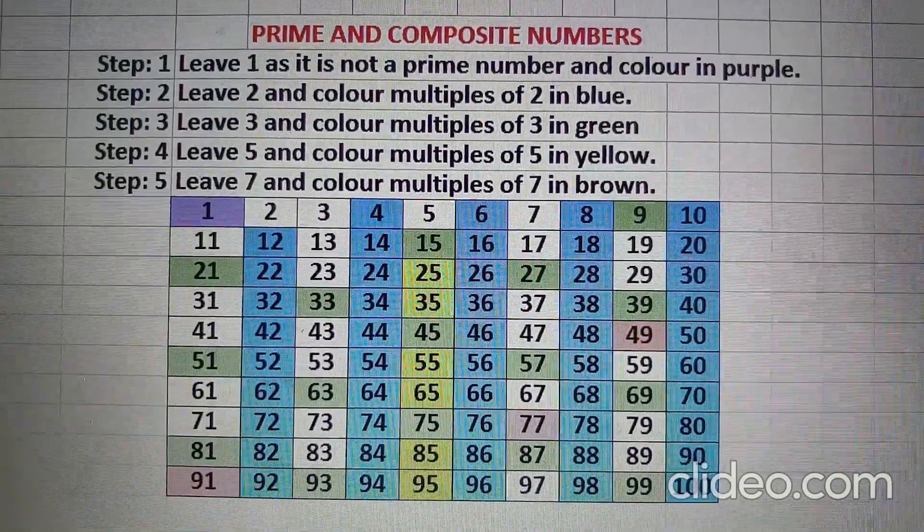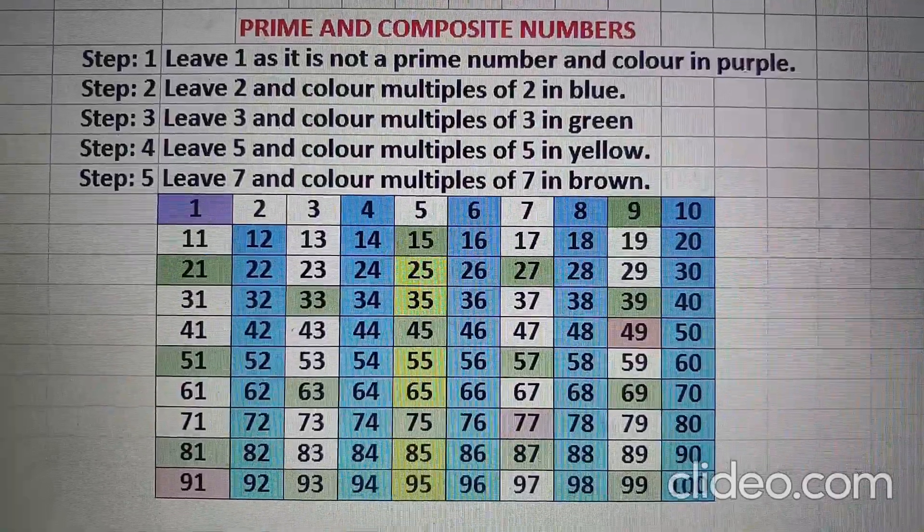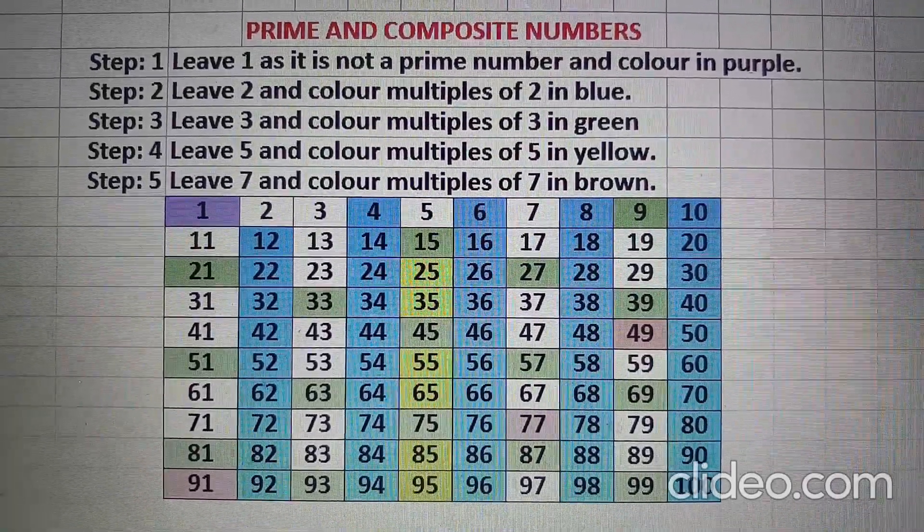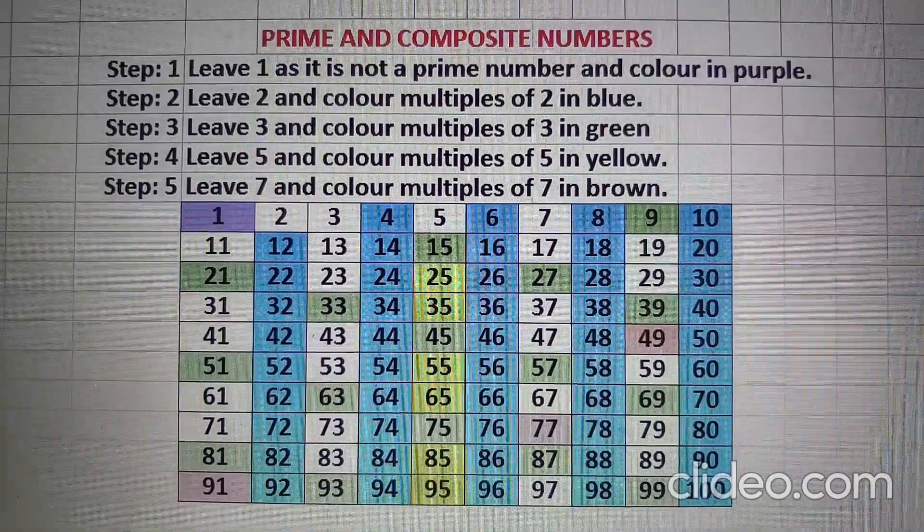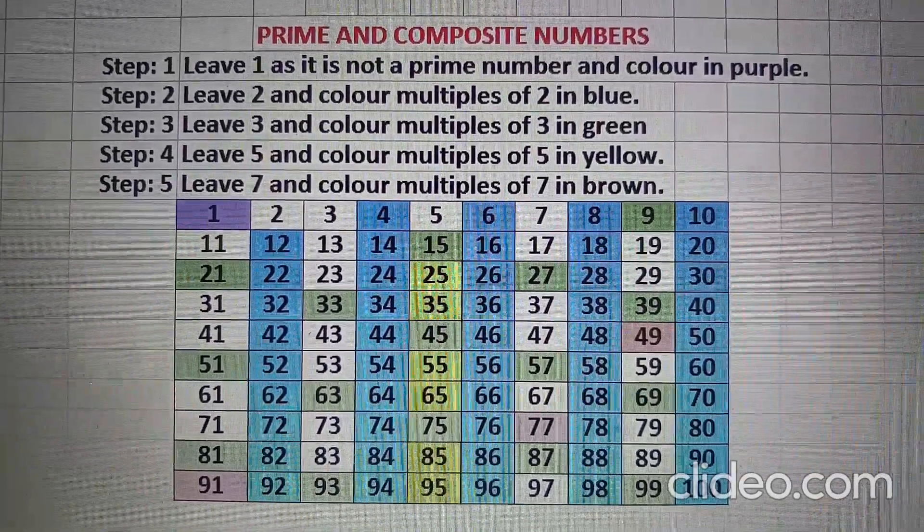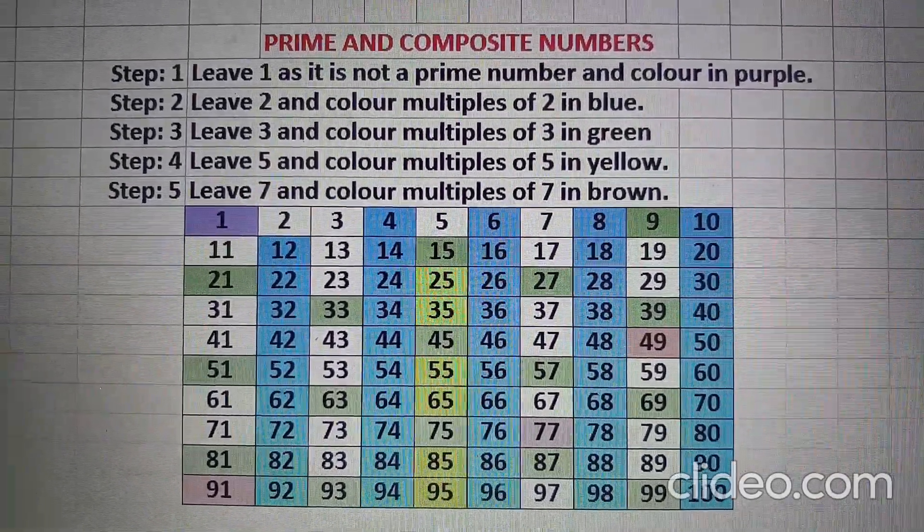This method of separating prime and composite numbers is also known as the Sieve of Eratosthenes. He was a great mathematician. He designed this method to separate prime and composite numbers between 1 and 100.